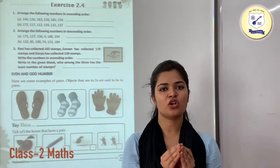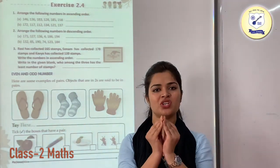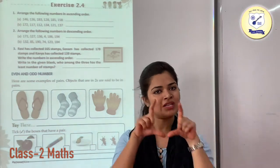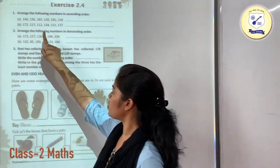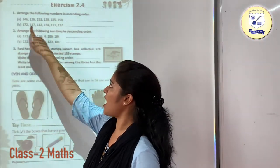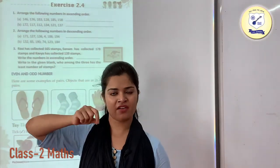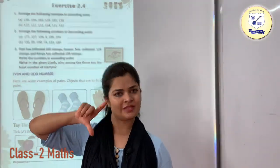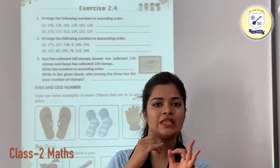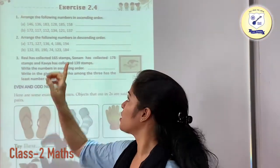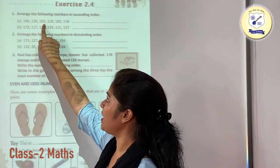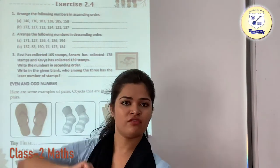As we know, in ascending order we arrange the numbers from smallest to the biggest. First, find out the smallest number. You can see that the place value of hundreds is the same for everyone, so we are just going to check the tens place value of the numbers. Here it is 5, then 8, then 2, then 8, then 3, then 4.